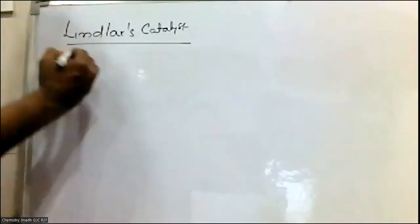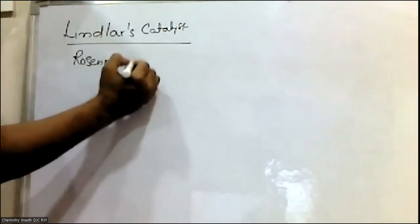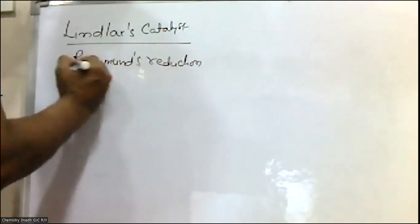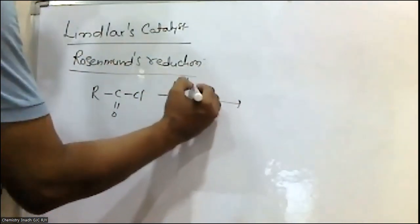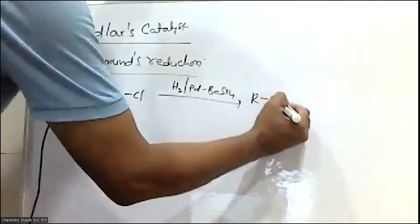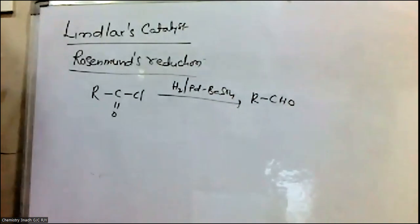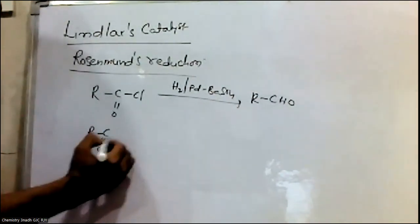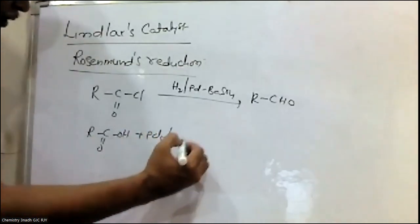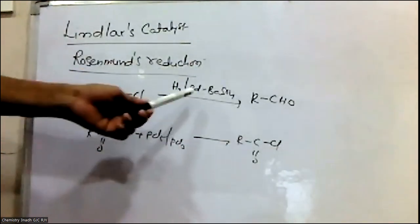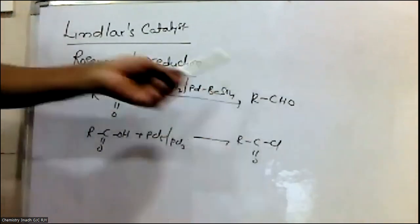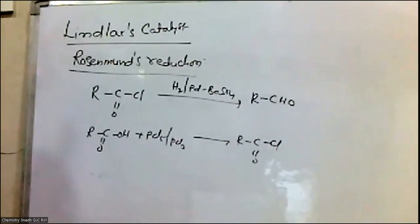Another reaction is Rosenmund's Reduction. When acid halides undergo reduction with Lindlar's Catalyst, aldehydes are formed. This reaction is called Rosenmund's Reduction. When carboxylic acids are treated with PCl3 or PCl5, we get the corresponding acid chlorides, which on reaction with Lindlar's Catalyst give aldehydes.